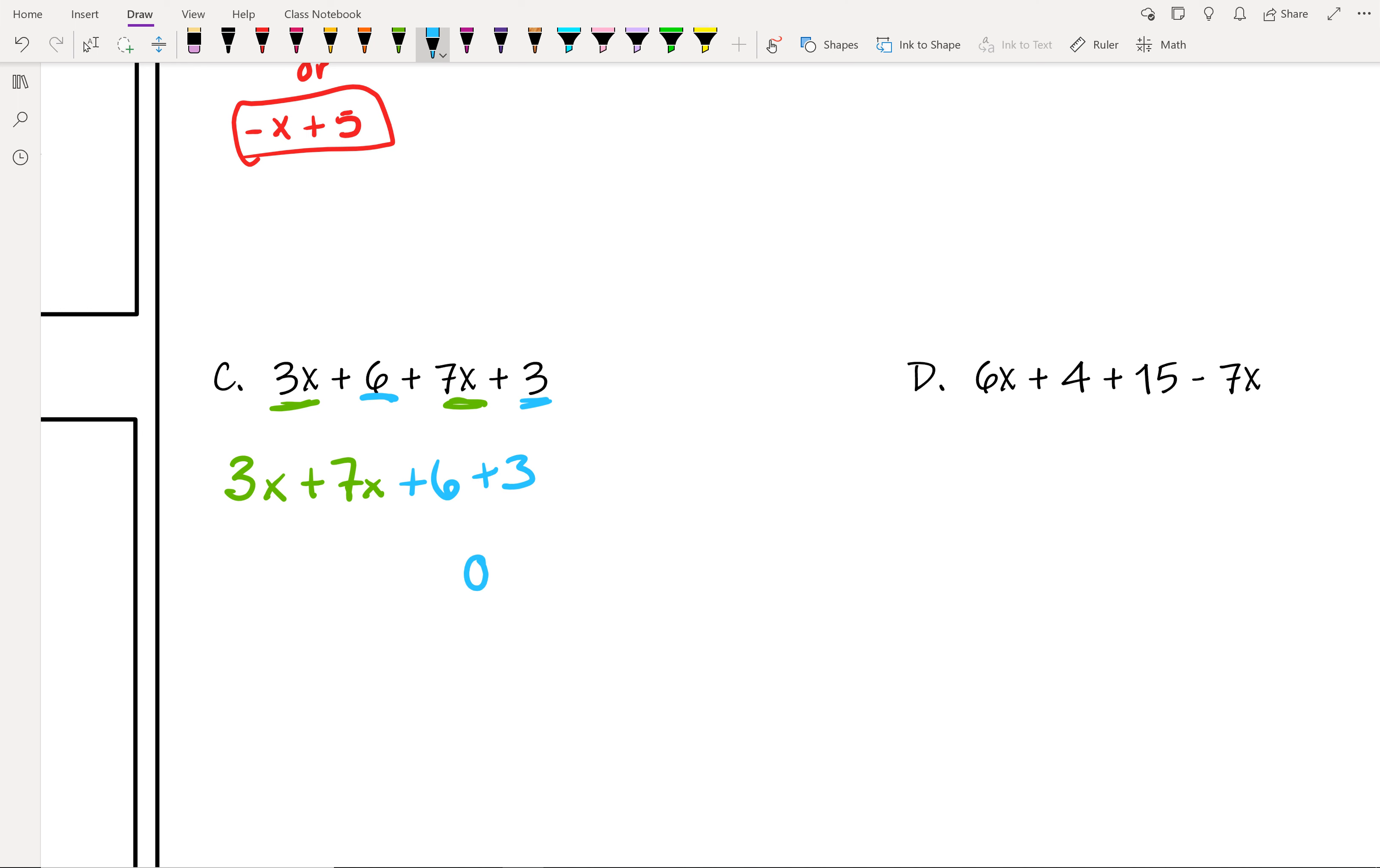Alright, now that we have that, why don't you guys finish it off by simplifying and let me know what you get with things combined. Alright, 3 plus 7 is 10, so we have 10x. And then 6 plus 3 is 9, so it's 10x plus 9.